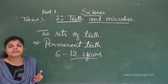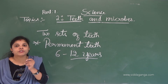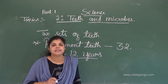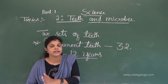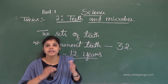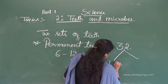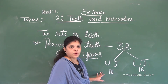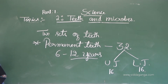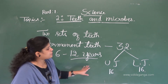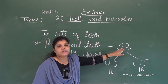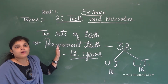In permanent teeth, the upper jaw consists of 16 teeth and the lower jaw consists of 16 teeth. Total 32 permanent teeth are there. These 32 permanent teeth carry through our whole life.